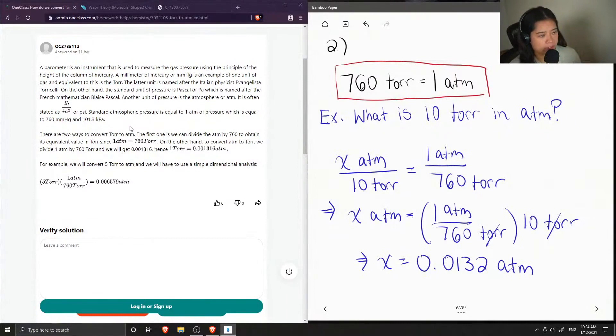There are two ways to convert TOR to ATM. The first one is we can divide the ATM by 760 to obtain its equivalent value in TOR, since 1 ATM is equal to 760 TOR. On the other hand, to convert ATM to TOR, we divide 1 ATM by 760, and we will get 0.001316. Hence, 1 TOR is equal to that in ATM.